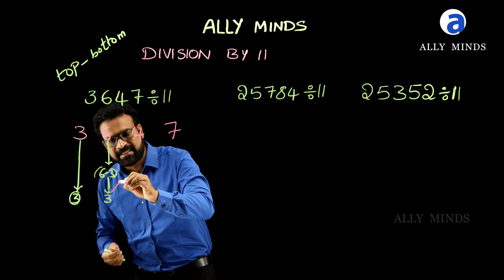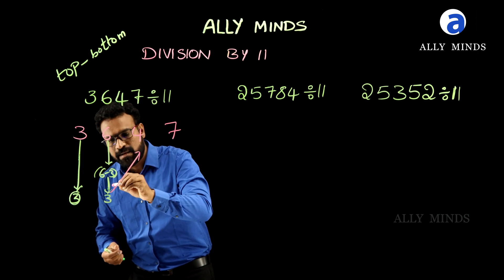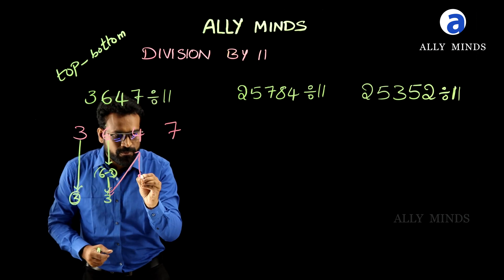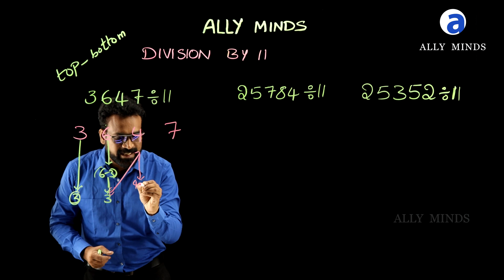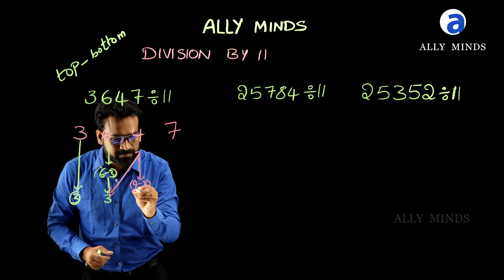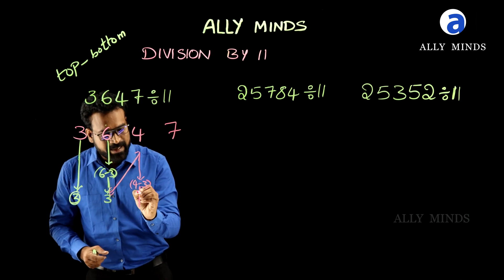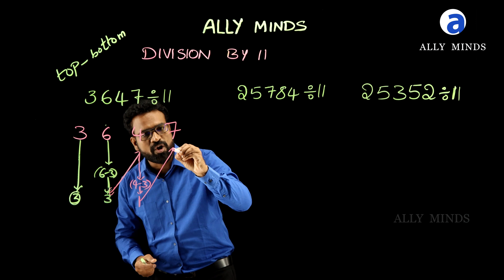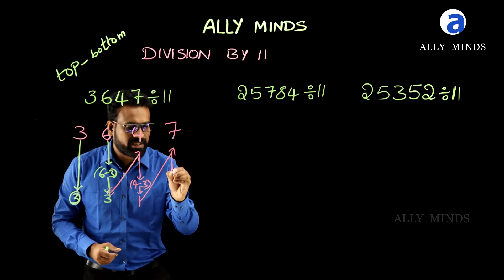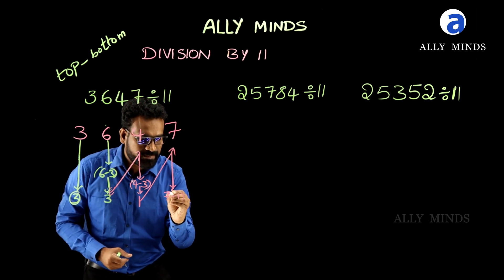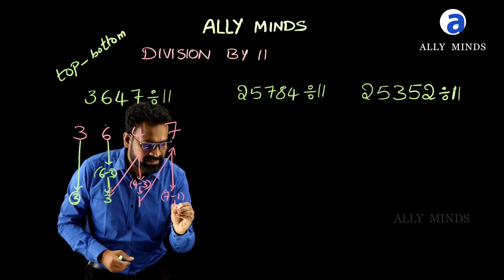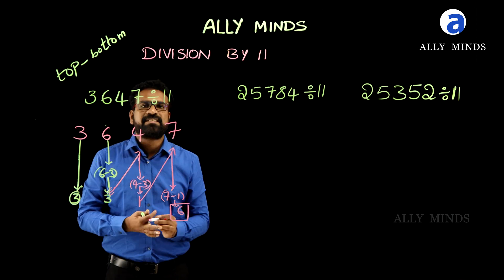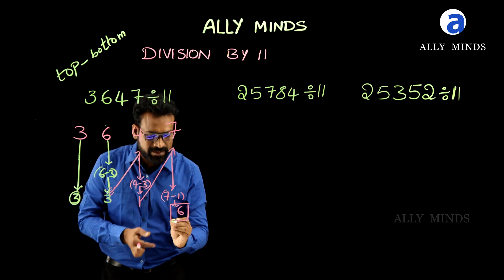Now again subtract this bottom number 3 from the top number 4. 4 minus 3 is 1. Again subtract this bottom number 1 from the top number 7. 7 minus 1 is 6. Here the last digit always represents the remainder.